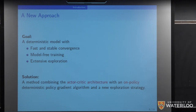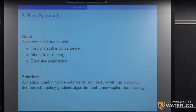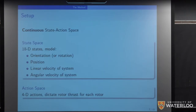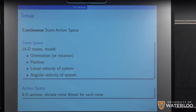For on-policy algorithms, we need a good exploration strategy, because if we always follow the current policy, we might never reach a better one. The basic system setup uses a continuous state-action space. We model the dynamics including position, rotation, angular and linear velocity of the quadrotor, and take continuous actions — specifying the thrust on each rotor at each point in time.